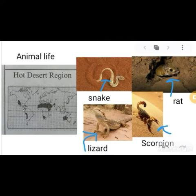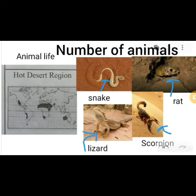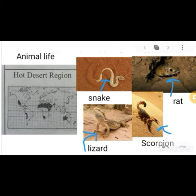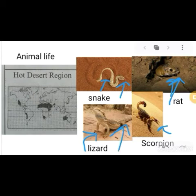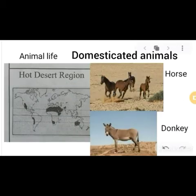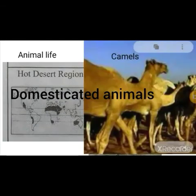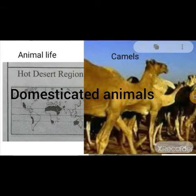The number of animals living on the ground in the hot desert region is less. Animals such as snakes, rats, lizards, and scorpions live inside the ground during the daytime. Domesticated animals like horses, donkeys, sheep, and oxen are also found. Camels have been used for transporting goods and for riding, and can survive for days without water.